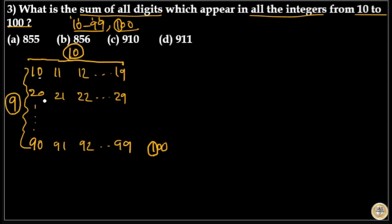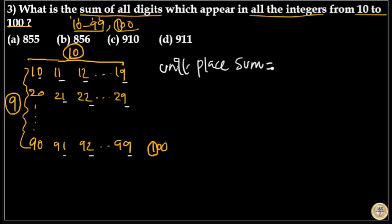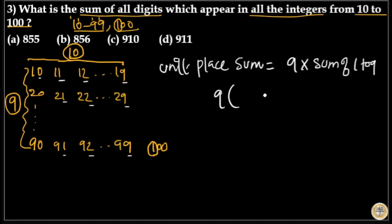To find the sum of unit place digits: in the first column, unit place digits are all 0. In the remaining columns, unit place digits are 1 to 9 in the first row, 1 to 9 in the second row, and so on, repeated in all 9 rows. So the unit place sum equals 9 times the sum of 1 to 9, which equals 9 × (9 × 10 / 2) = 9 × 45 = 405.